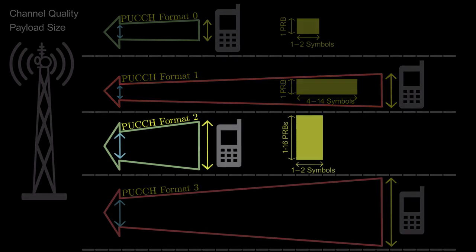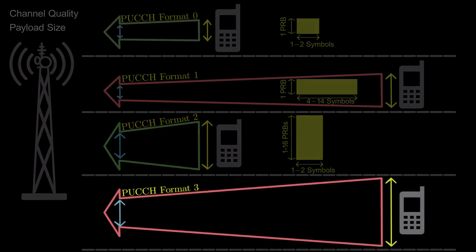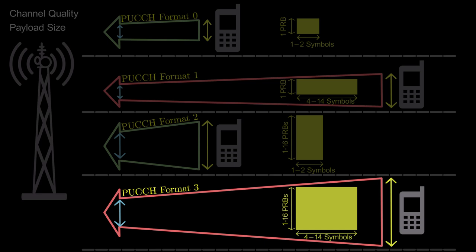PUCCH format 2 is allocated in 1 to 16 PRBs over 1 or 2 symbols and PUCCH format 3 is allocated in 1 to 16 PRBs over 4 to 14 symbols.